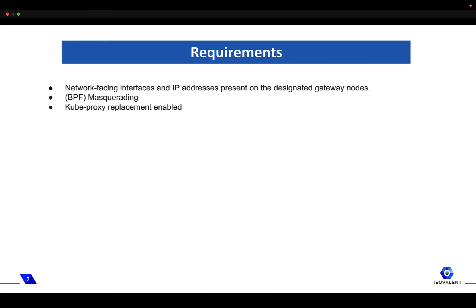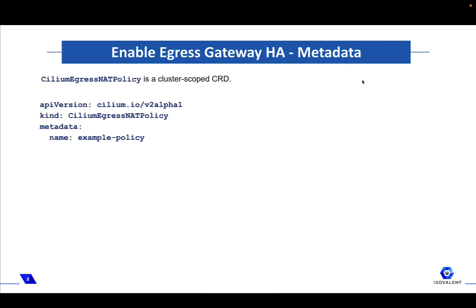Other cloud providers may have similar networking requirements and constructs. On physical environments, it may mean that you configure your gateway nodes with specific network-facing interfaces which are connected to some kind of transit network connecting to routers or external firewalls, which are able to forward traffic to your external resources. Additionally, the enablement of the egress gateway feature requires that both BPF masquerading and the kube-proxy replacement are enabled.